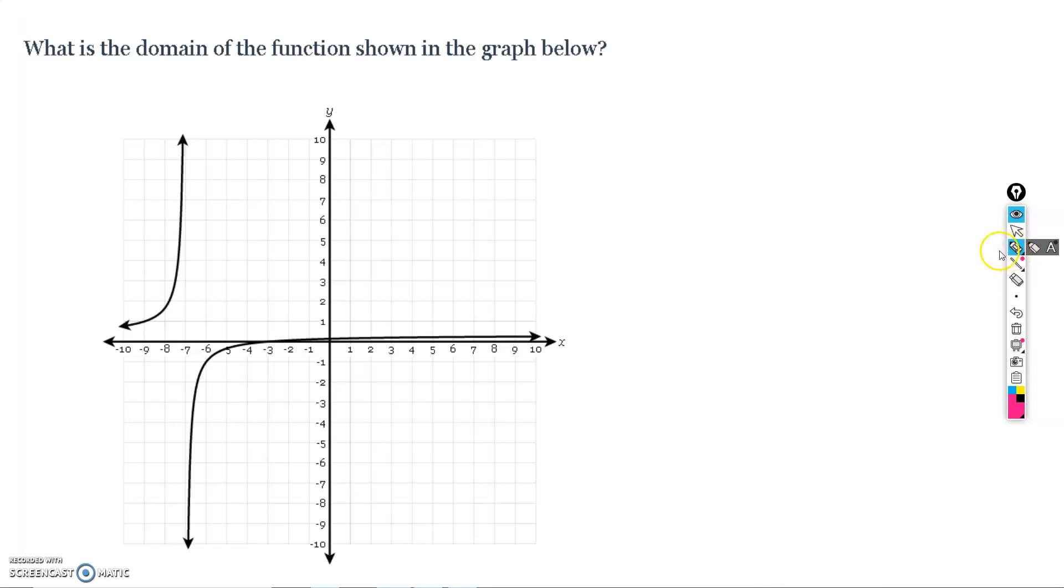Okay, so domain is synonymous with x values. So we basically want to say, what x values does this function cover? And when I say cover, I mean literally cover. So if we look at this graph, and domains think, how far left does this function go? How far right does this function go? And are there any holes or spaces in between?